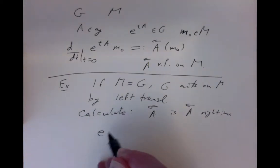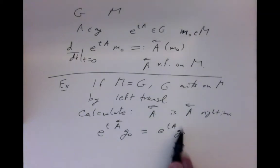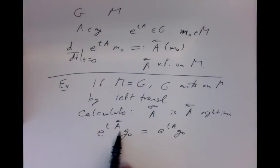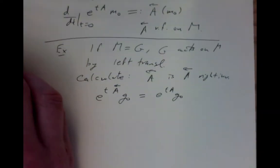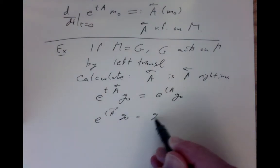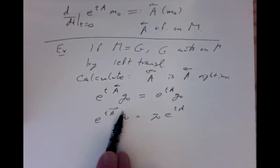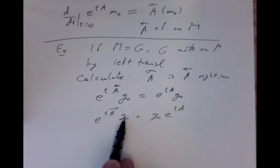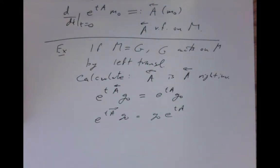Previously we found that the flow of the right invariant vector field through a point is given by the exponential multiplied by that point — this being the exponential in the group. If we'd gone with the left translations to the right translation, it wouldn't have worked. The left invariant vector field generates translation on the other side, which is why we write these vector fields with right invariant vector field notation.